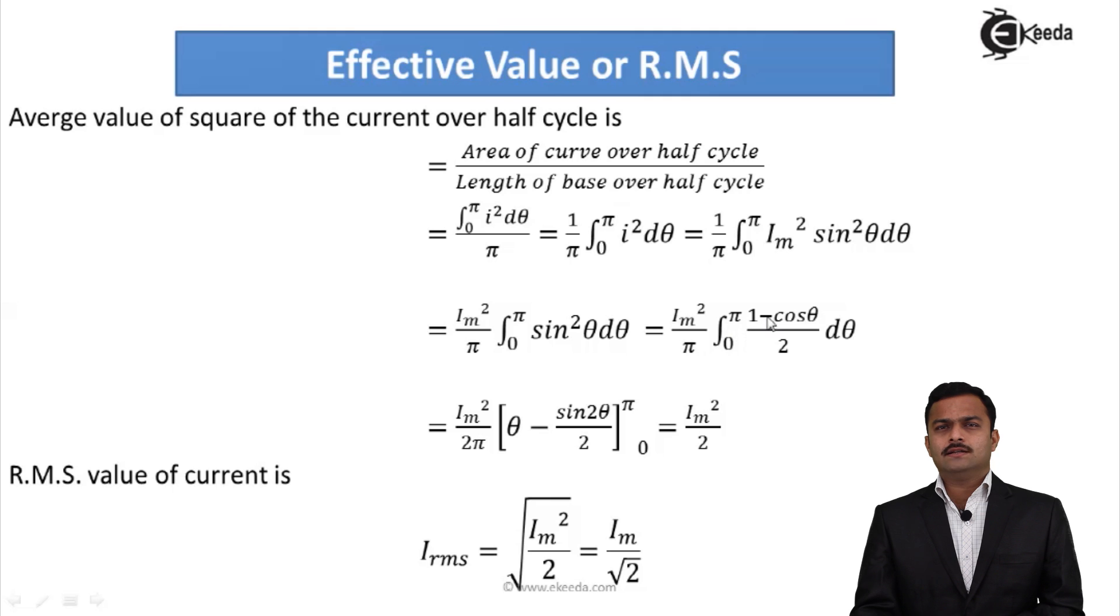So ultimately I will get 1 - cos 2θ inside integral. Integral of 1 is θ, integral of cos 2θ is sin 2θ divided by 2. If I apply the limits, ultimately I will get I_m²/2.